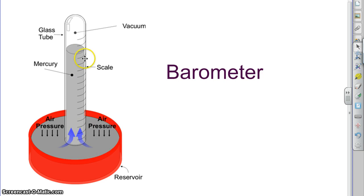The air pressure outside is pushing this mercury up the tube towards the vacuum. At high air pressure, this column will get pushed up higher. At lower air pressure, the column would fall.